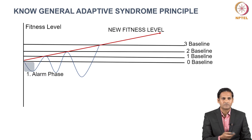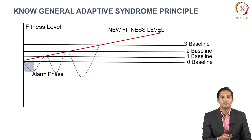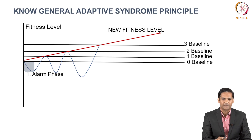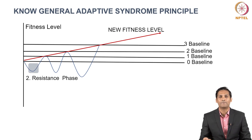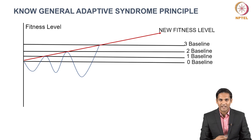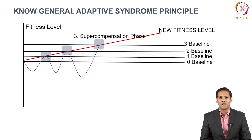In the alarm phase, an obvious drop in fitness level happens, marked by increased fatigue, tiredness, or muscle soreness. Followed by this, a wave of resistance phase begins. In this phase, the body undergoes a recovery process and moves toward adaptation — changes in the body that happen as a result of the fitness training completed. The next part of the wave is the new baseline, called the supercompensation phase, where you have achieved a new fitness level.